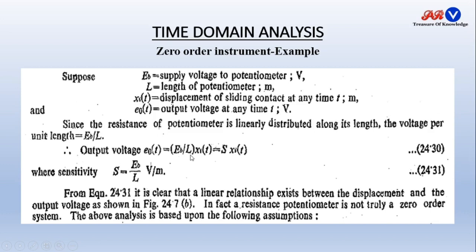Here Eb is the supply voltage to the potentiometer in volts, L is the length of the potentiometer in meters, Xi(t) is the displacement of the sliding contact at time t, and E0 is the output voltage at time t. Since the resistance of the potentiometer is linearly distributed along its length, the voltage per unit length is Eb/L. Output voltage equals S·Xi(t), where S = Eb/L (volts per meter) is the sensitivity. There is no time lag present.